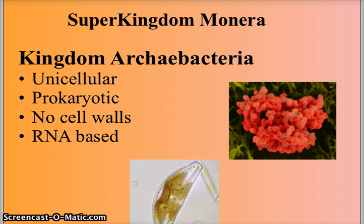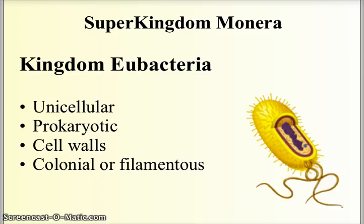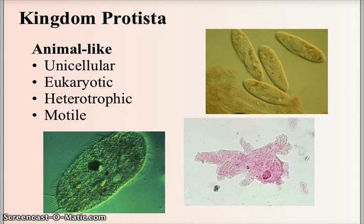Archaebacteria are unicellular and prokaryotic with no organized nucleus. They typically do not have cell walls and are RNA-based. The eubacteria are also unicellular and prokaryotic, but they do have cell walls and will often live in colonies or in long filaments.